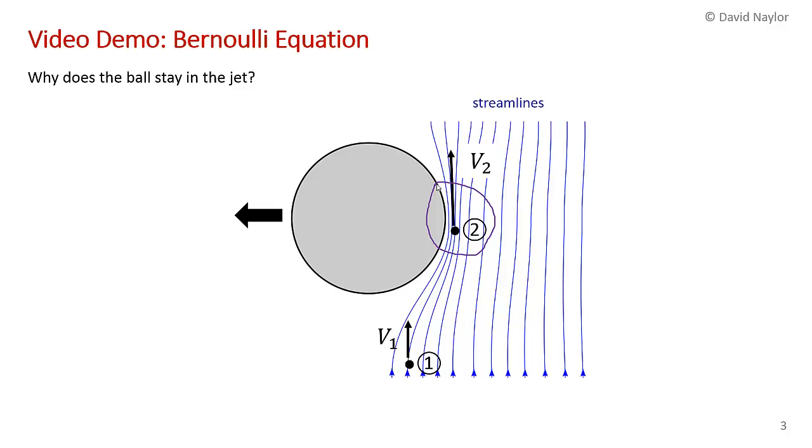And so, if you recall from the previous demonstration with the pop cans, what's happening here is the flow passes by the curved surface of the ball, it's picking up kinetic energy, and that kinetic energy has to come from somewhere. It comes at the expense of pressure energy, or flow work.